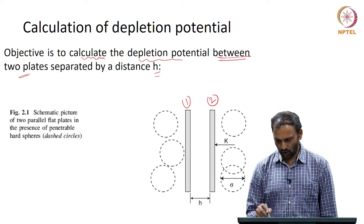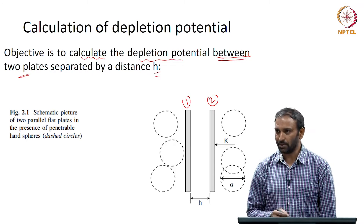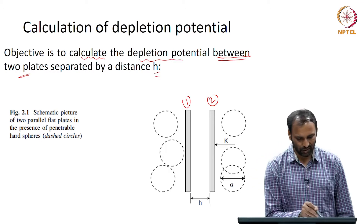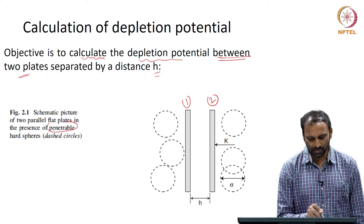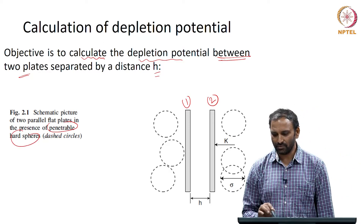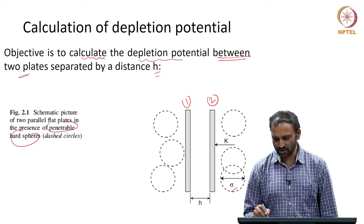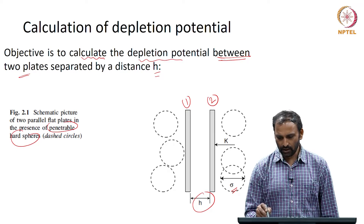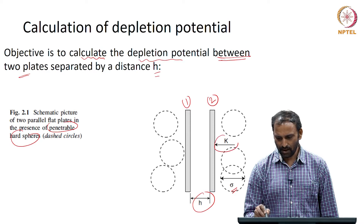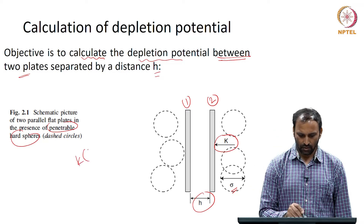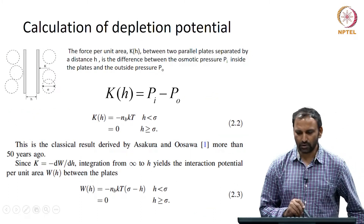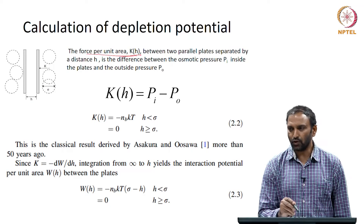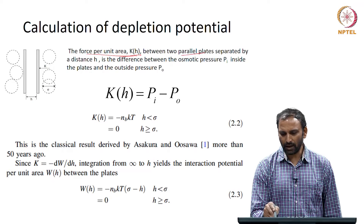That is plate 1 and plate 2. The dotted lines you see can be imagined to be polymer molecules — referred to as penetrable hard spheres. The separation distance is h. K is the force per unit area between the two parallel plates separated by distance h, which is the difference between the osmotic pressure inside and the osmotic pressure outside.